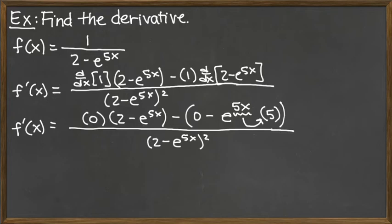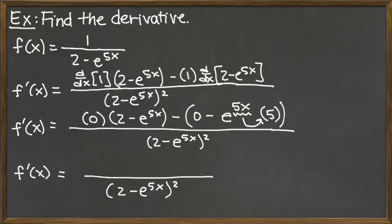Okay, so at this point we just need to clean up our work a little bit. We've taken the derivative and so we're just ready to clean up our answer. So again, we're going to not forget the bottom. We're going to put in the 2 minus e to the 5X and square it. That's on the bottom.